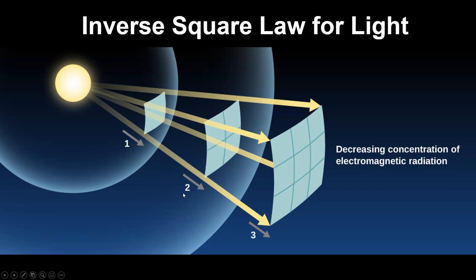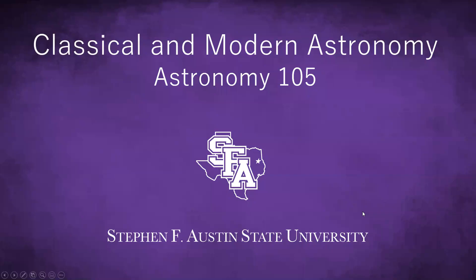Two squared is four, so it's one-fourth the brightness. And if we move three times further away, three squared is nine, so it's decreasing the amount of brightness by one-ninth. And if we went four times further, it would be one-sixteenth the amount of brightness. And say we went ten times further away, it would be one-hundredth the amount of brightness. So it doesn't just fall off as the distance — because then it would be half as bright, a third as bright. It goes as the square of the distance. That's why it's called the inverse square law for light.